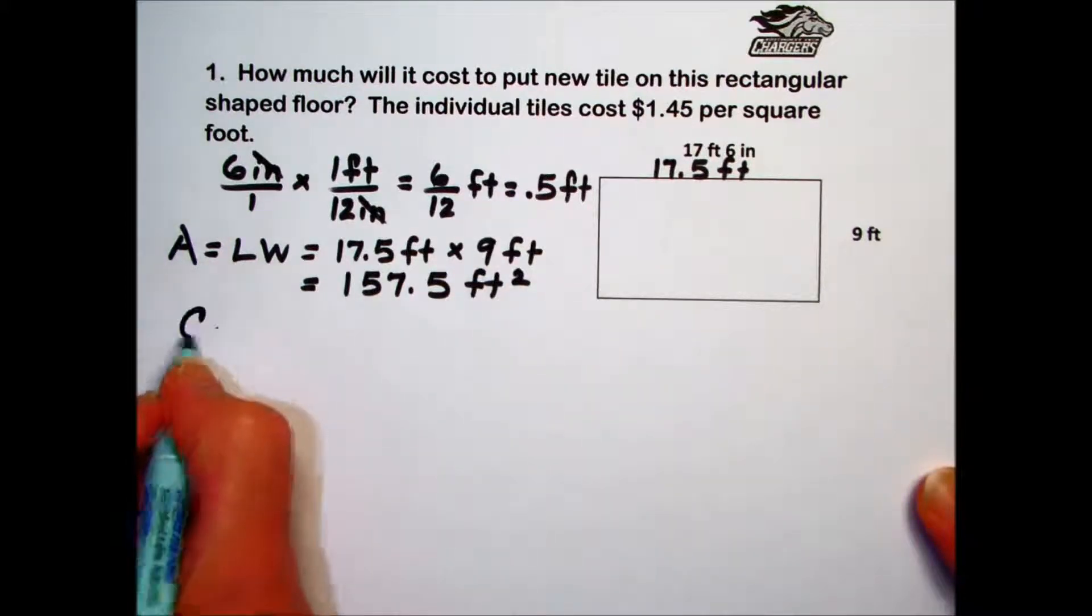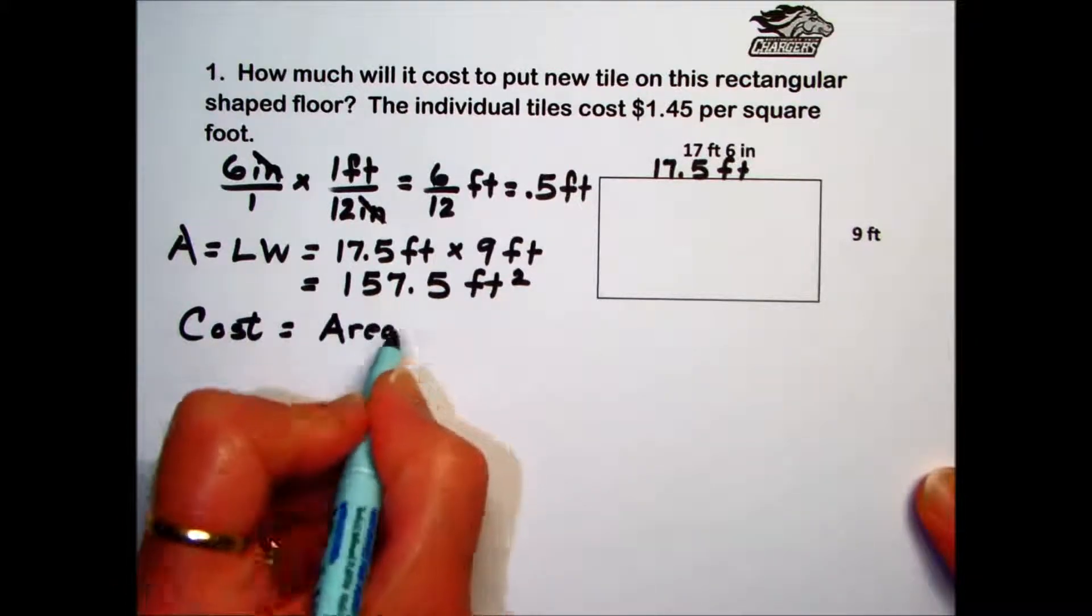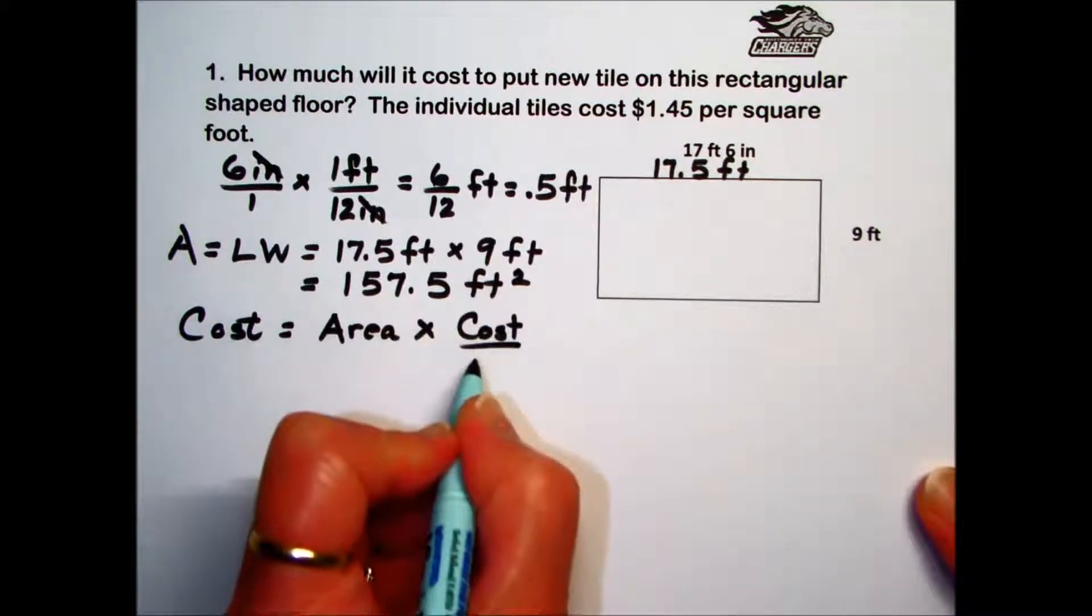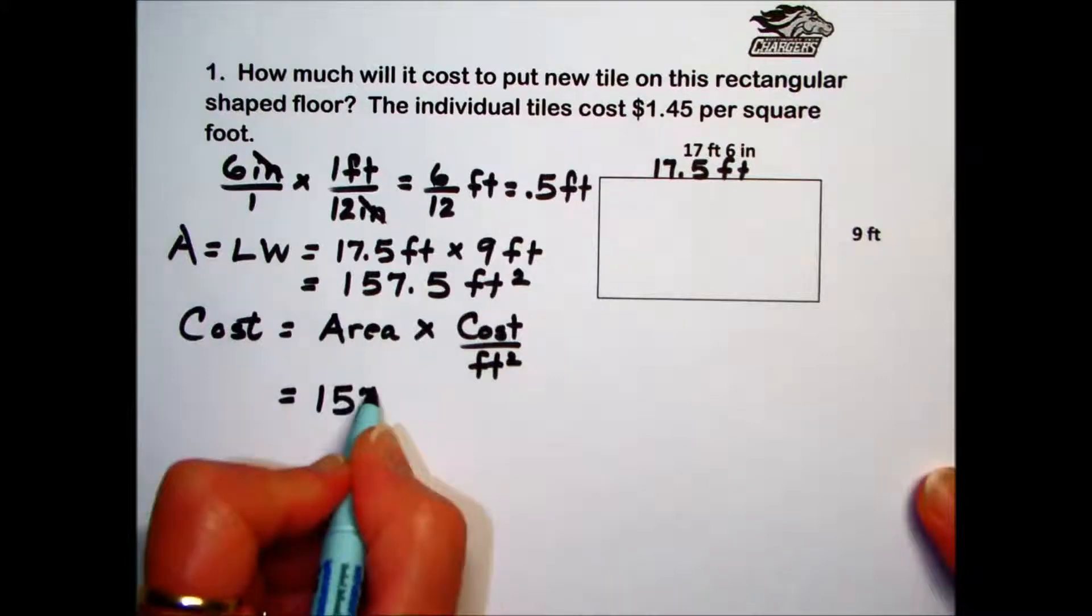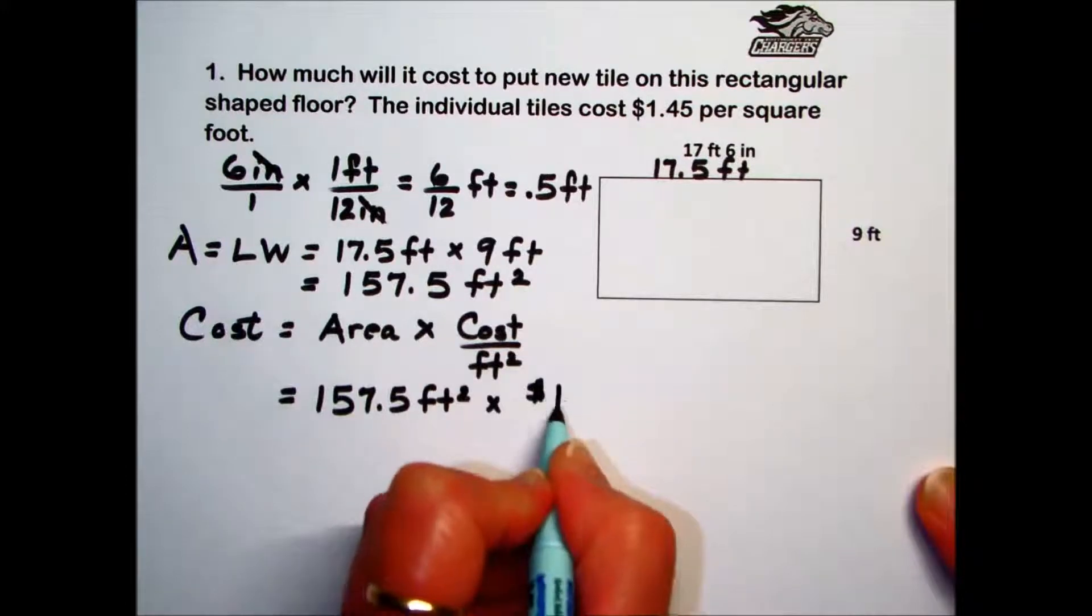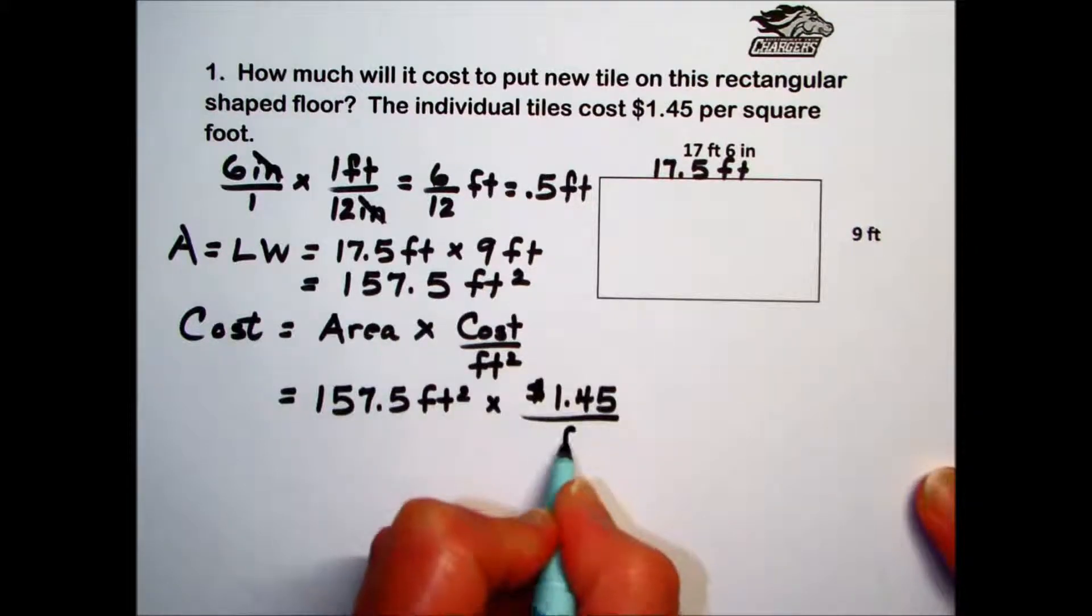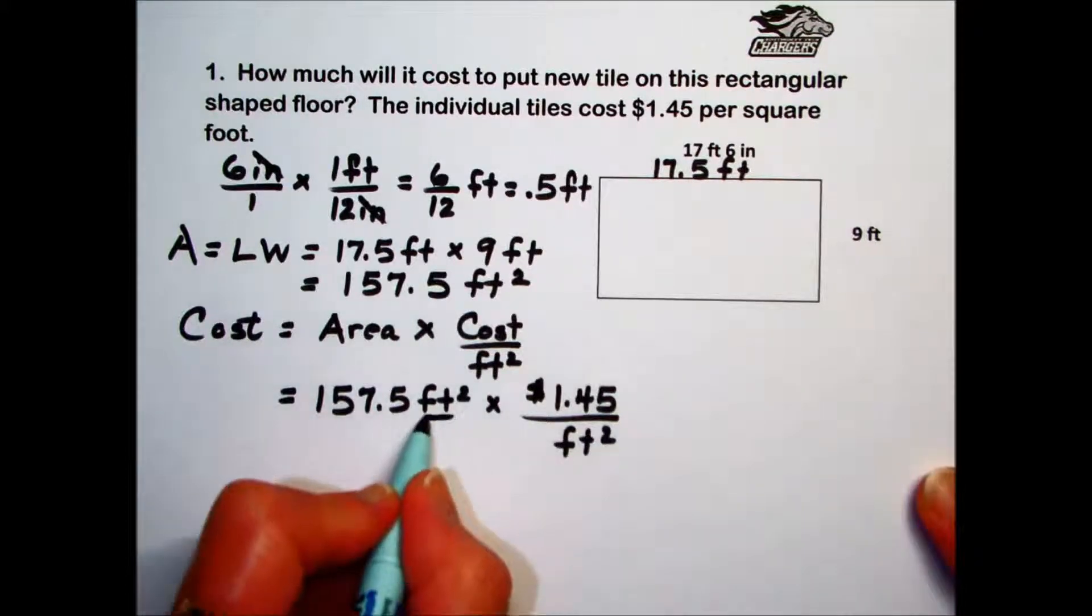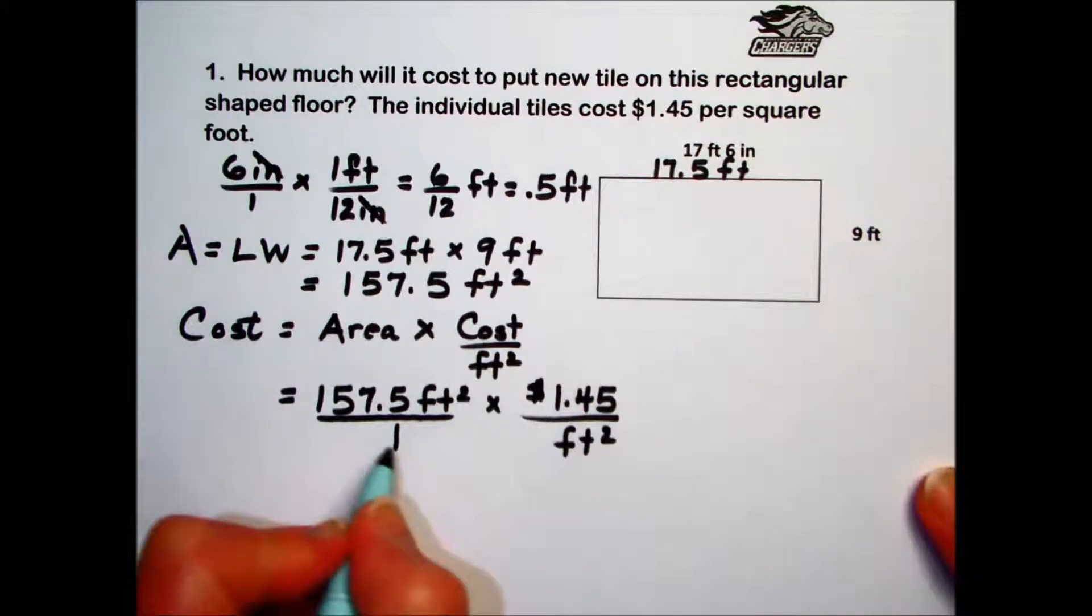To determine the cost and answer the question, we're going to take the area of the room and times it by the cost per square foot of the tile. The area value we found was 157.5 feet squared, times $1.45 per square foot. Multiplying these together, and to help us with this because of the cost being a fraction, I'll put a denominator of 1 underneath our area.